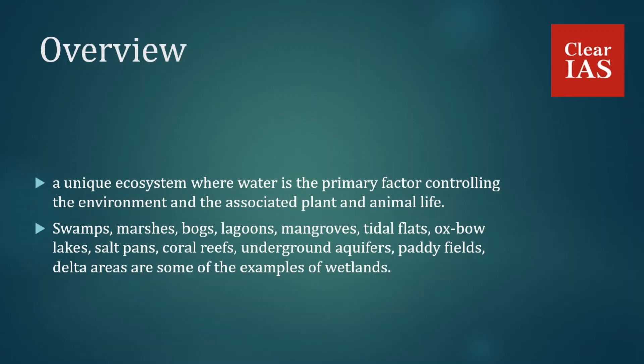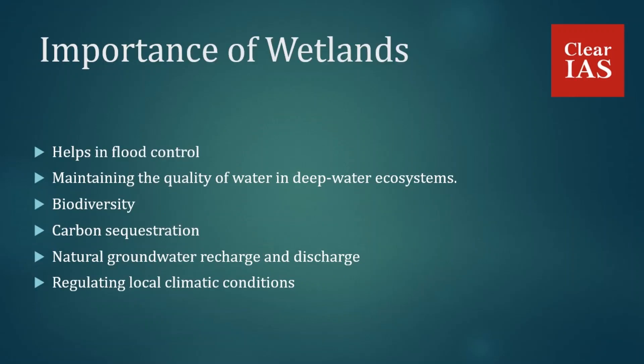Now let's see the importance of wetlands in our environment. Wetlands are amongst the most productive ecosystems and provide a wide range of services to the ecosystem. Firstly, wetlands help in flood control by acting as natural sponges — temporarily storing and gradually releasing storm water. The roots of wetland vegetation also hold soils in place, stabilizing the banks of rivers and streams.